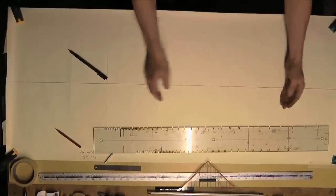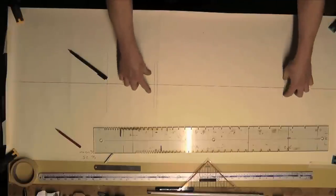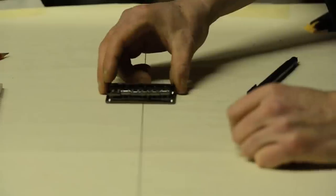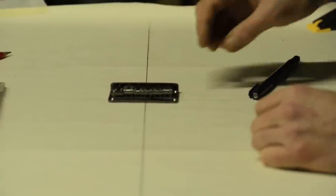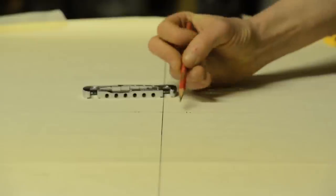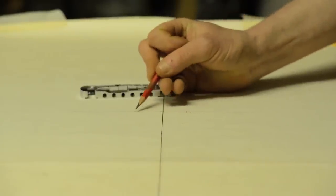We've got the ends, we need the width of the fretboard. So where does that come from? It comes from the bridge. My E to E spacing is here and then I've added 4mm either side.